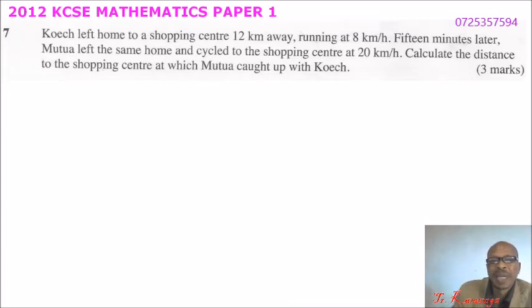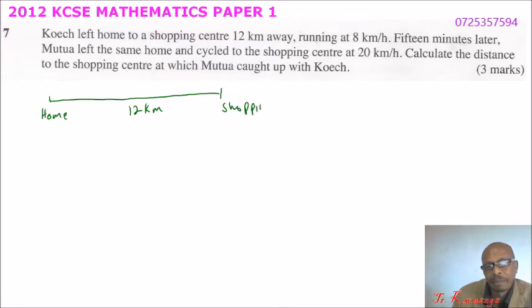So, we can use a simple illustration here. Let's say this is the distance that was to be covered, which is 12 kilometers. This is the shopping center. Just to help you understand how we get about.